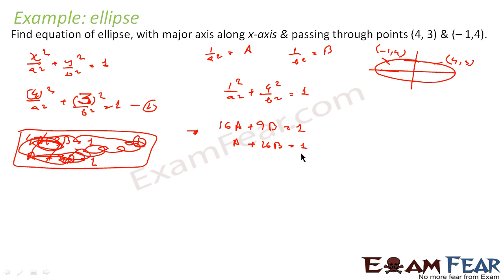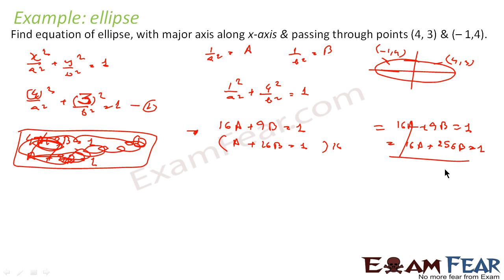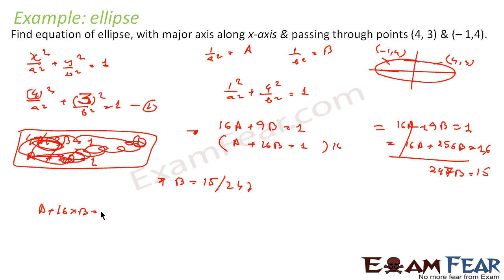Multiply the second equation by 16 to get 16A + 256B = 16. Subtracting the first equation: 247B = 15, so B = 15/247. Then A = 1 − 16B = 1 − 16×(15/247) = 7/247.